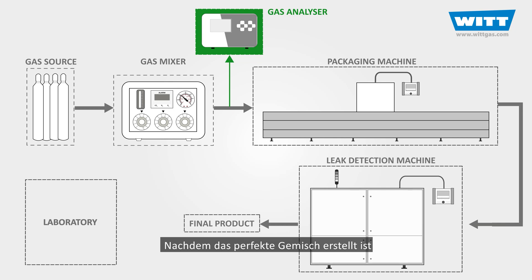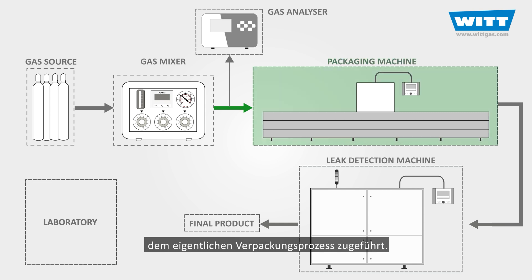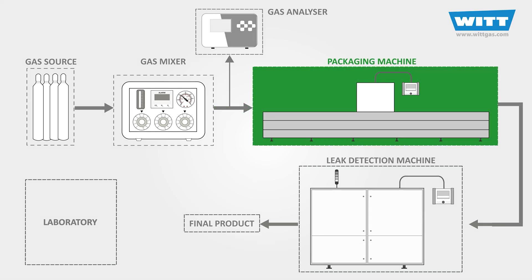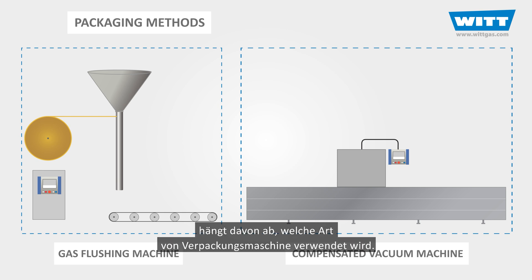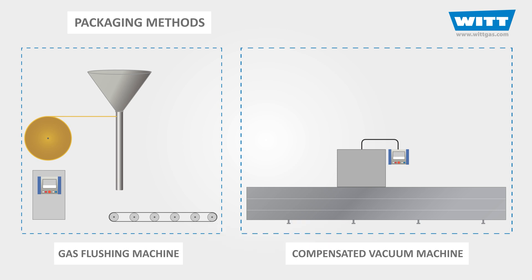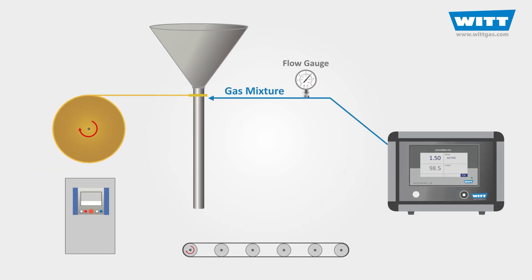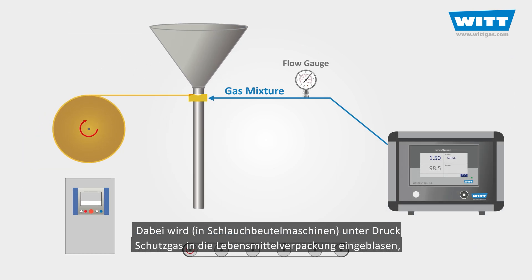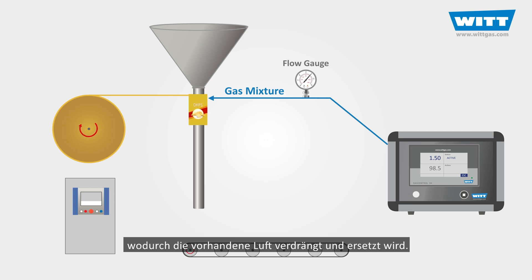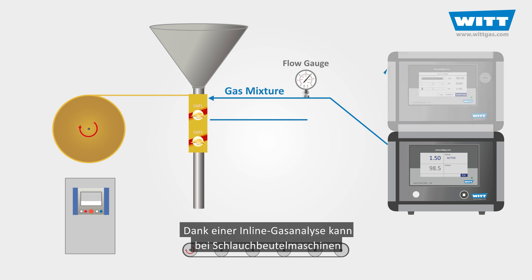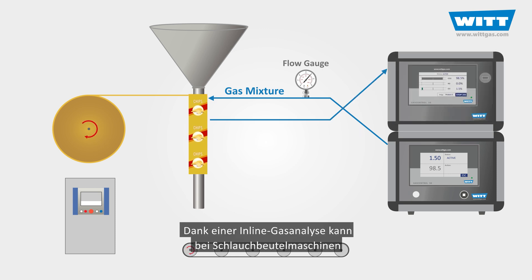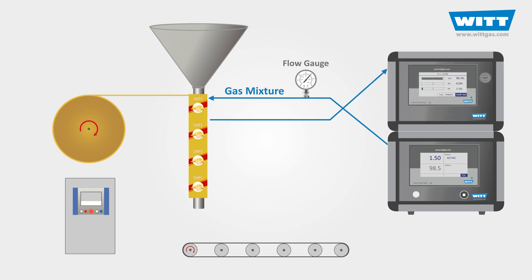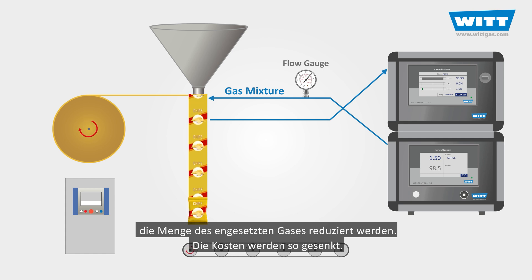After achieving the perfect mixture, the gas mixture at the required pressure will enter the next step, which is the packaging step. How the modified atmosphere is applied to the packaging depends on the type of machine we use. The first method is called gas flushing, where we insert a pressurized gas stream into the food package so that the desired gas mixture replaces the air inside. Using an in-line analyzer, it's possible to reduce the amount of gas used, and by this, to save money in flow pack machines.